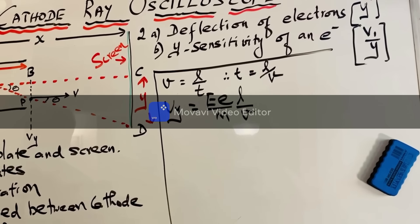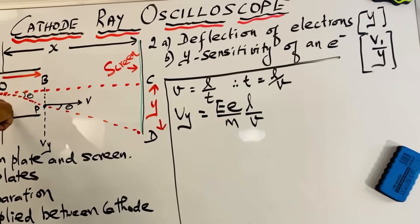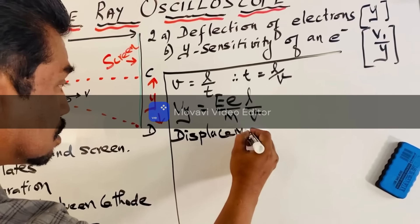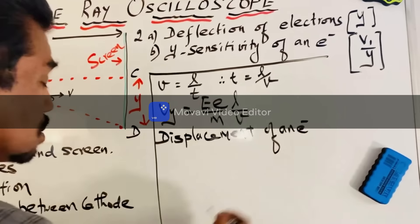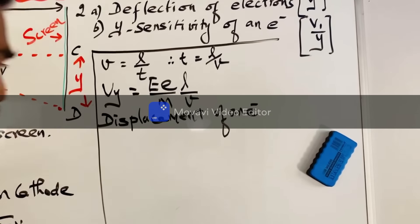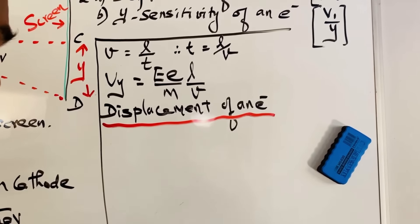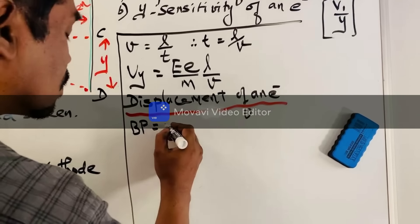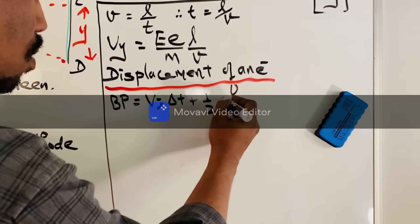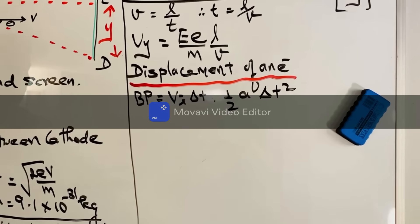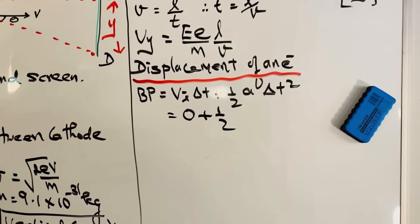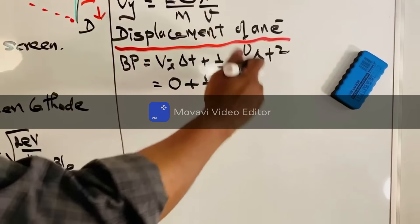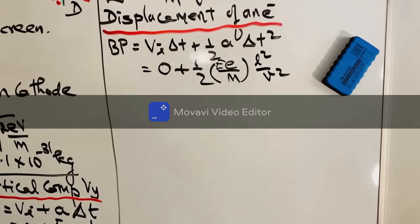Next, we calculate the displacement BP of the deflected electron using Newtonian mechanics: BP = Vy×Δt + ½A×Δt². Since the initial vertical velocity is zero, BP = ½ × (eE/m) × t². Substituting t² = L²/v², we get BP = ½ × (eE/m) × (L²/v²).